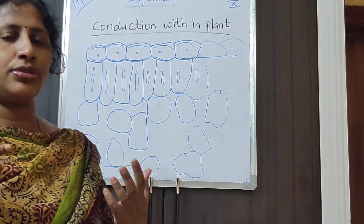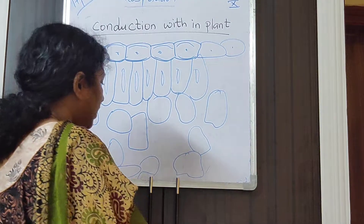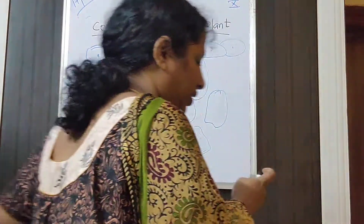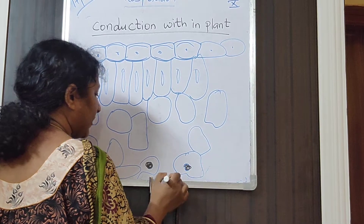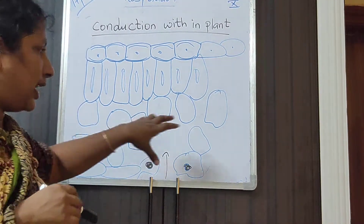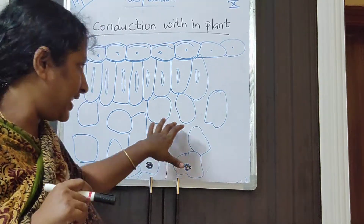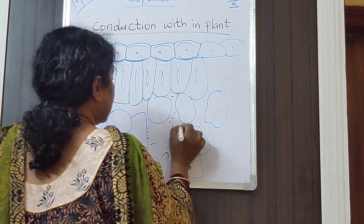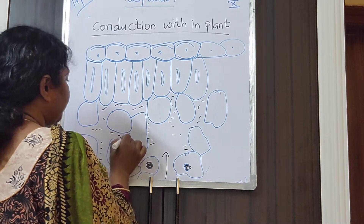The stomatal openings lead to a series of spaces in the cells. This is the stomatal opening. Now, in the stomatal opening, the air enters into the cell. In between the cells there are spaces — the air enters into the spaces in between the cells.